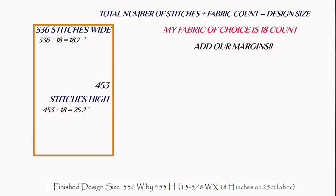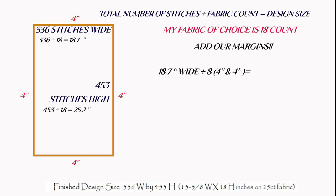So going back to our width: I need 18.7 inches wide. I want to put four inches on one side and four inches on the other — four and four is eight. So whatever my width is in inches — 18.7 — I add eight, giving me 26.7 inches wide. That's my fabric width sorted, accounting for left and right margins.